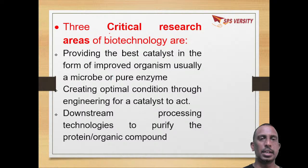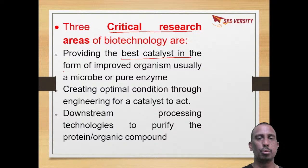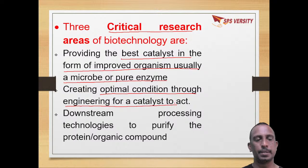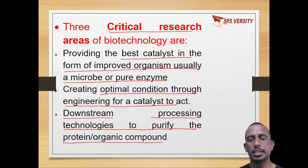In this application there are three critical research areas: providing the best catalyst in the form of an improved organism from a microbe or a pure enzyme; creating optimal conditions through engineering for catalysts; and downstream processing — that is the processing of biotechnology products to purify the protein and organic compounds. These are the three critical research areas of biotechnology.